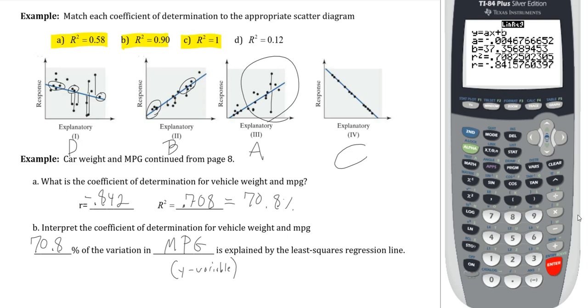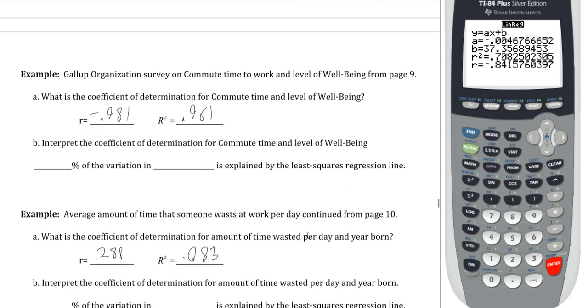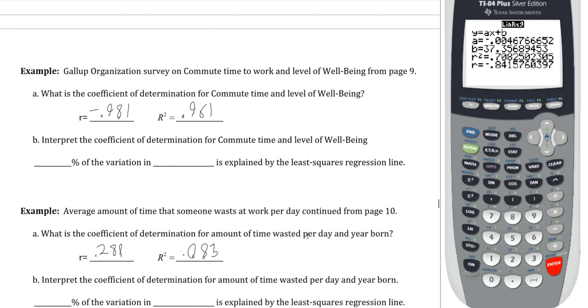Alright. So that's how those work. So another couple of quick examples. 4.3. Again, it's just attaching one other thing. These are the two examples. I already have the R and R²s here because these have printouts on page 9 and page 10. So I just grabbed R and R² from those printouts. For the first one for Gallup organization survey and commute time to work. So that's where we were looking at the commute time to work for individuals and how they rate their level of well-being. We found an R value of negative 0.981 and R² value 0.961.